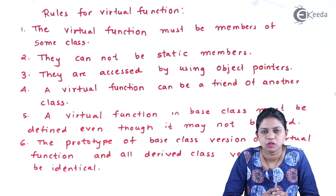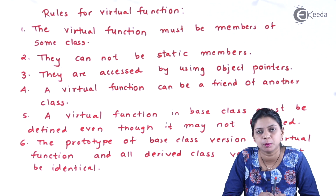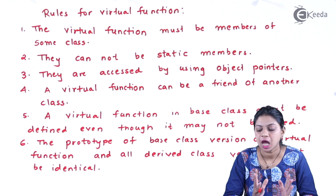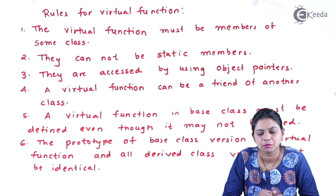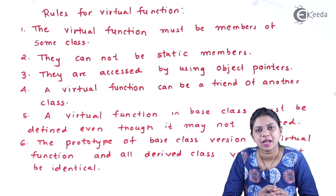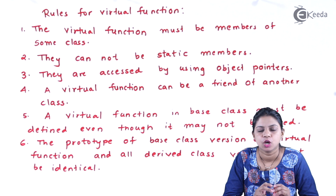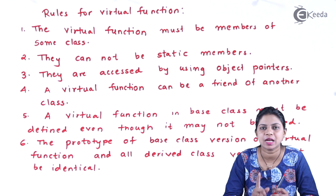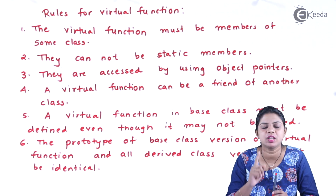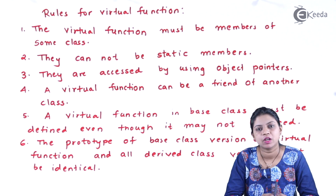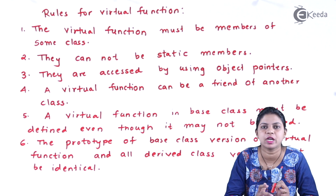There are some rules for virtual functions. Rule 1: a virtual function must be a member of some class. Rule 2: virtual functions cannot be a static member. Rule 3: they are accessed by using object pointers — as seen in the example, I created a pointer to the base class, which is necessary to access virtual functions. A virtual function can also be a friend of another class.